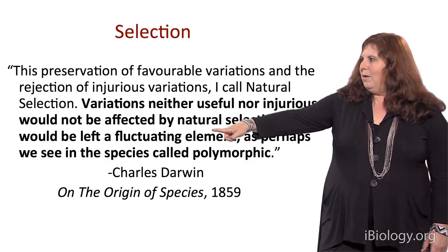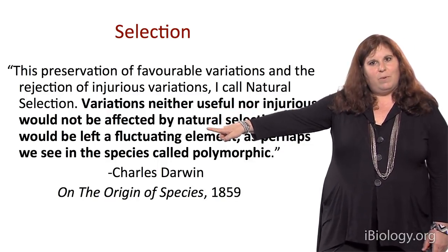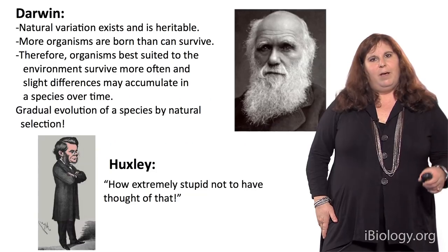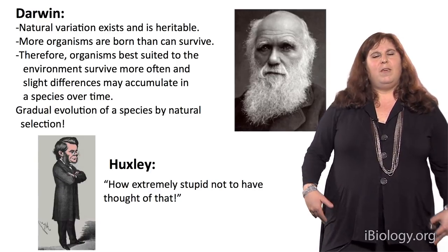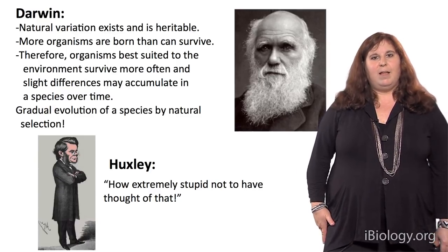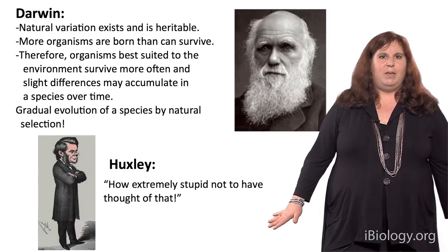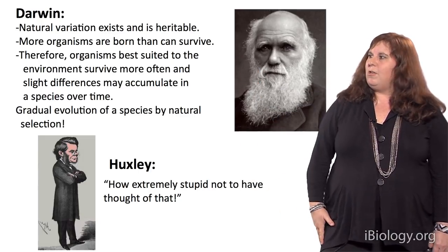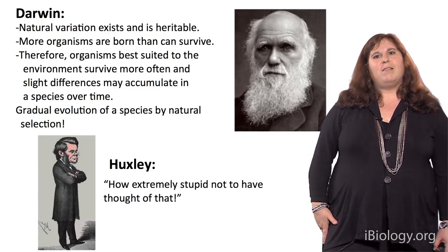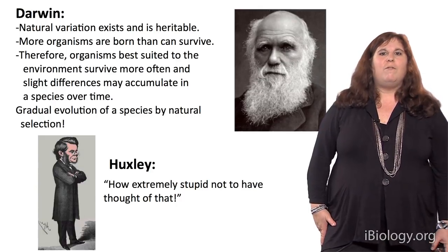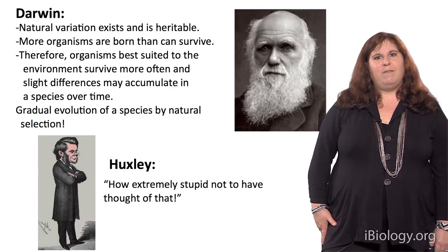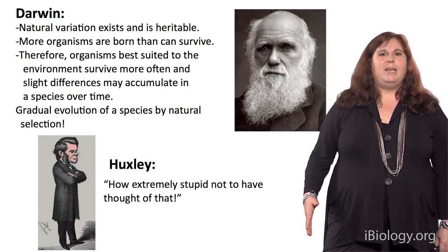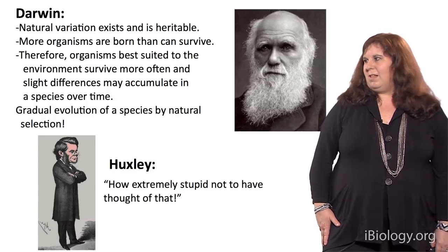You might recognize from our first lecture that Darwin's 'fluctuating element' is really talking about genetic drift — random fluctuations. However, part of the evolutionary change we see is not just due to random genetic drift, it's also due to natural selection. According to that theory, natural variation exists and is heritable, more organisms are born than can survive, organisms best suited to the environment survive more often, and slight differences can accumulate in a species over time. This is the idea of gradual evolution of a species by natural selection.